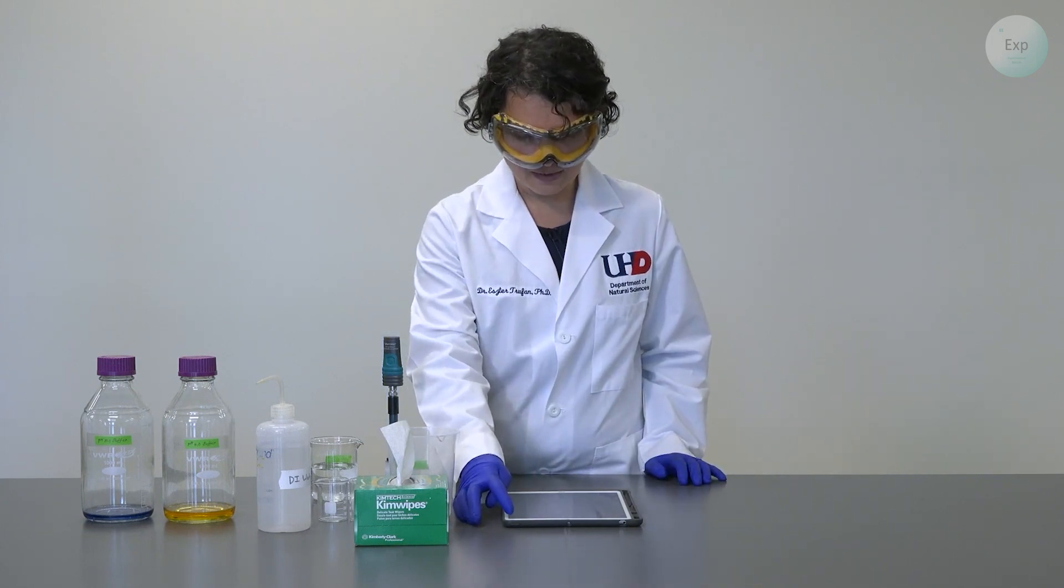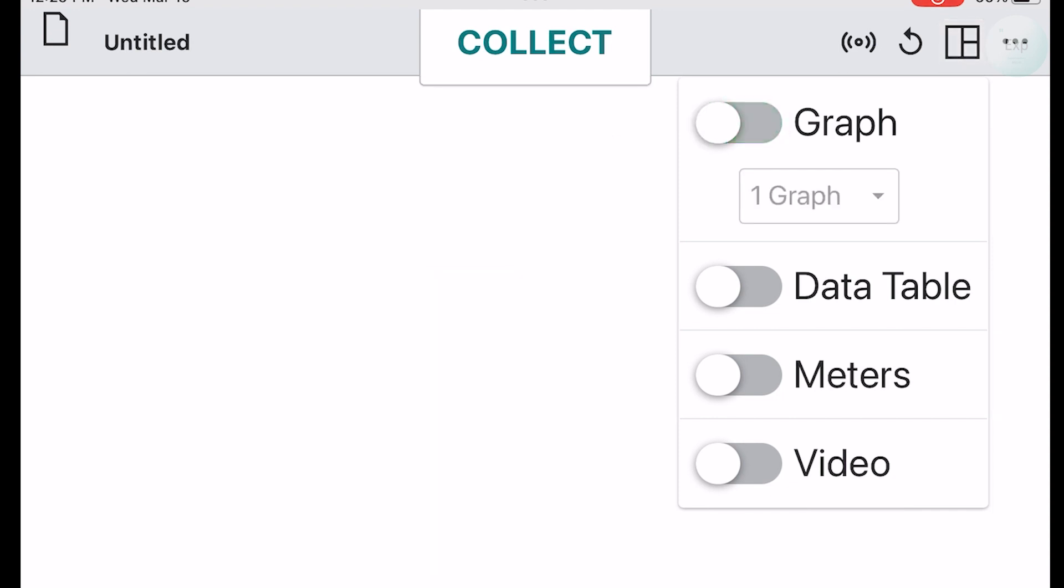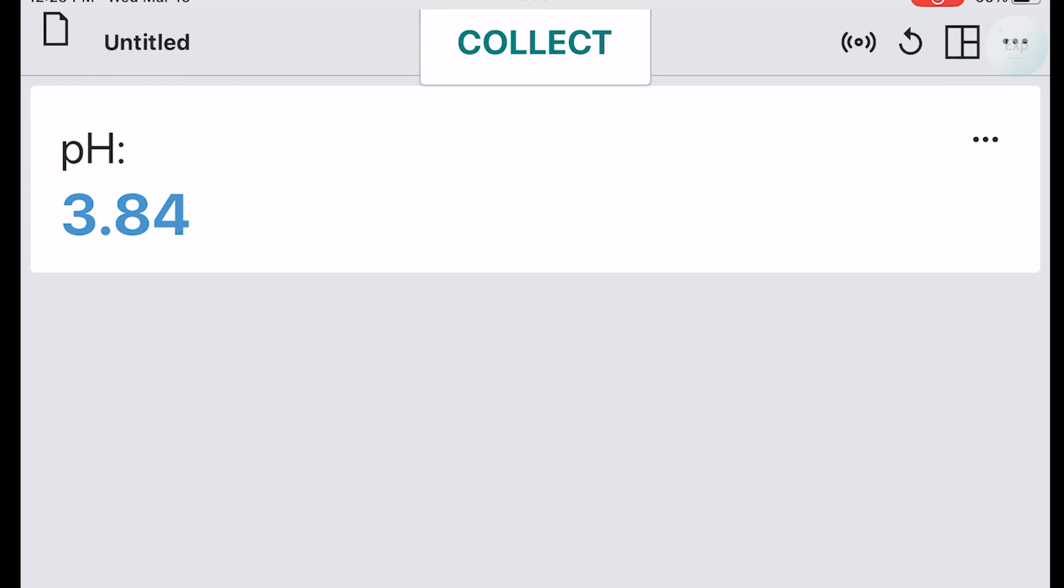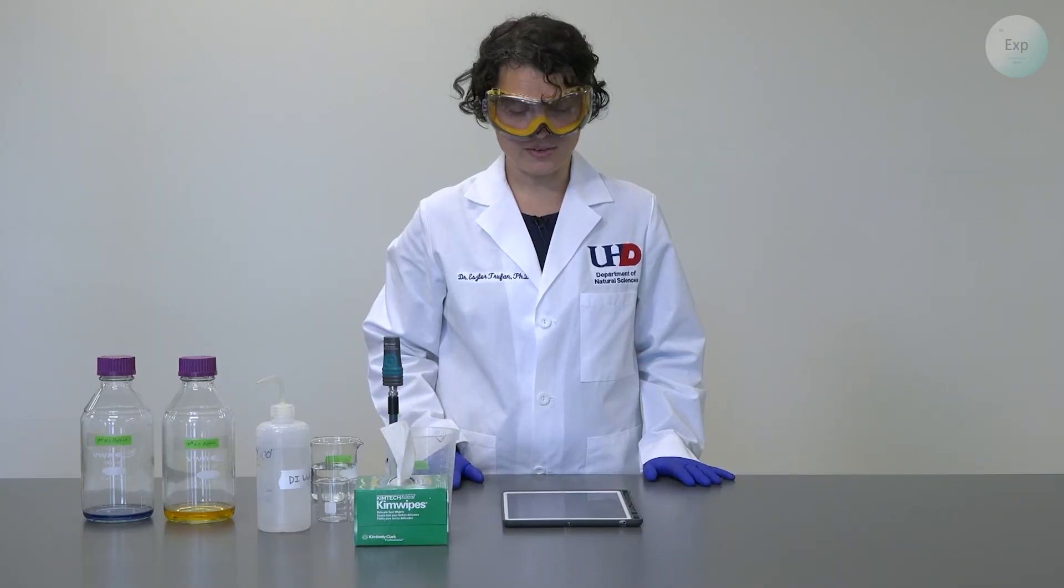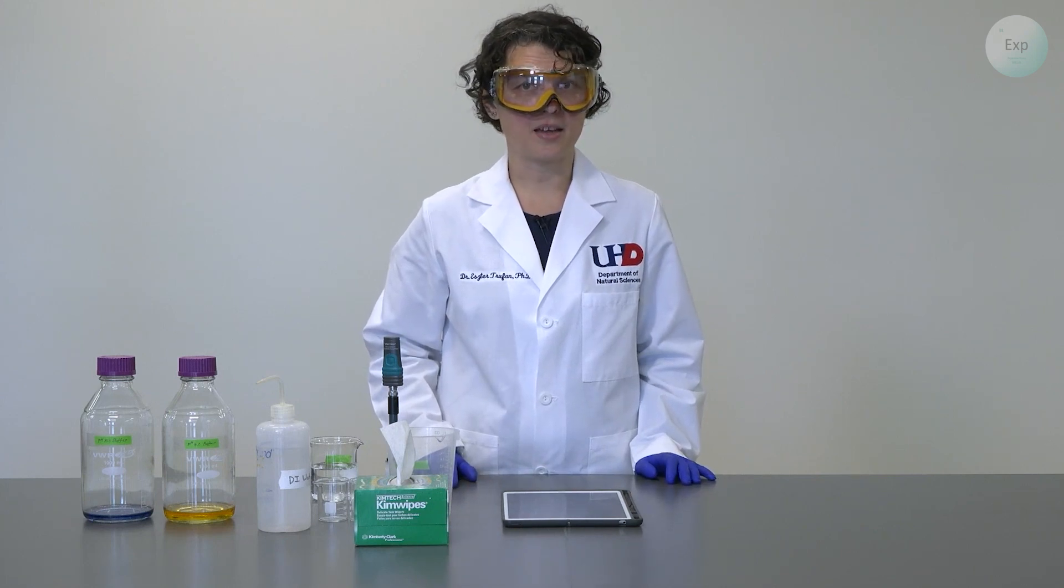So what I'm going to do instead is change it out. Instead of graph, I'm going to select the meters, and this way it will only show me the pH. So at any point of the titration process, I can look at it and it will indicate only the pH at that point.